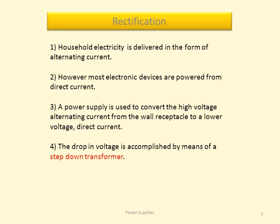The drop in voltage is accomplished by means of a step-down transformer. The process of converting AC to DC is called rectification.